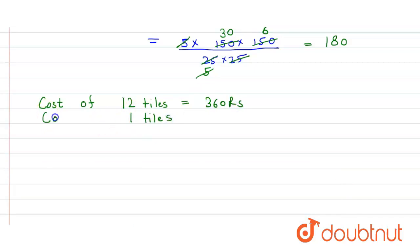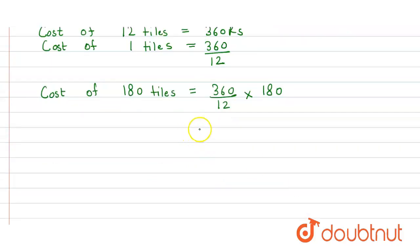So the cost of one tile equals 360 divided by 12, but we have to find the cost of 180 tiles. So the cost of 180 tiles will be 360 divided by 12 times 180.